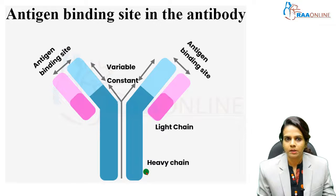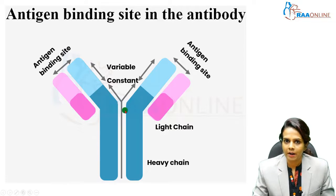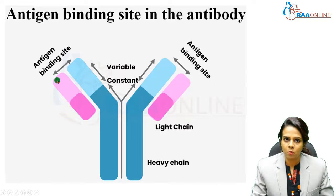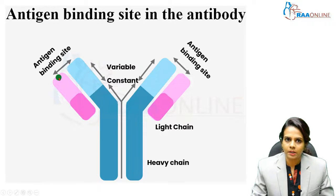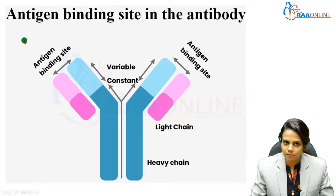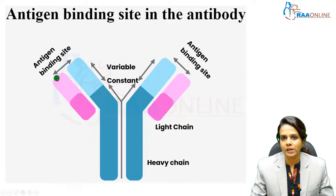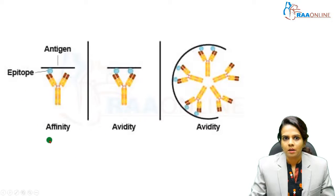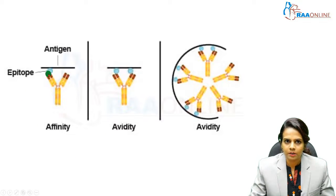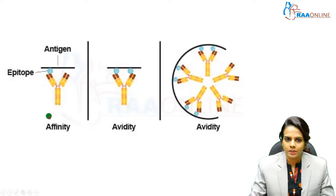Let me explain with the upcoming slide. This shows a structure of an antibody with the antigen-binding site. Here you can see the light chain and heavy chains, with the antigen-binding site where the paratope is located. When the antigen binds, the epitope of the antigen binds with the paratope of the antibody. A single epitope binding with a single paratope in the antigen-binding site of the antibody is called affinity.